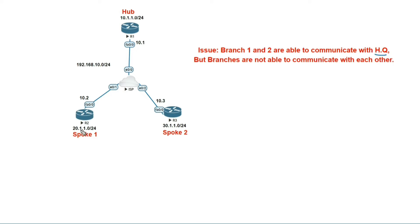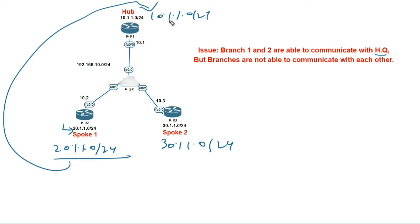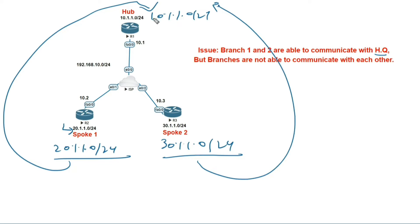Suppose this headquarter is in the US, this branch is in Bangalore, and this one is in Delhi. So we have one headquarter and two branch offices. The problem is branch one and two are able to communicate with headquarter, but branches are not able to communicate with each other.